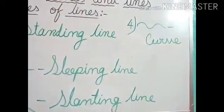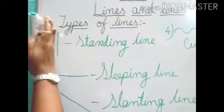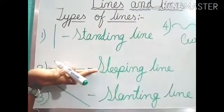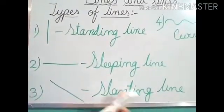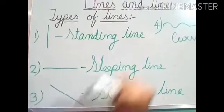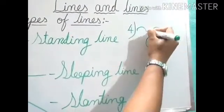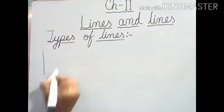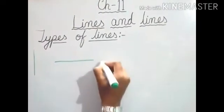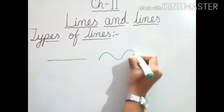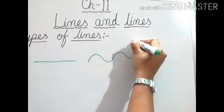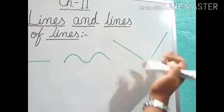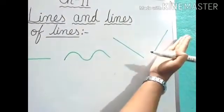So, again, see from the first: this one is Standing line like this. Number two, Sleeping line like this. Number three, Slanting line like this. And number four, Curve line like this. Slanting line can be like this also, means a little bit bent like this, or like this.